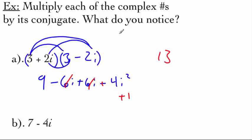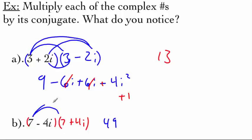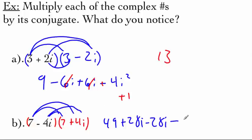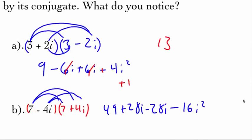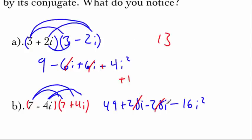When we multiply a complex number by its conjugate, we get a real number answer. Let's try 7 minus 4i — its conjugate is 7 plus 4i. FOILing: 7 times 7 is 49, 7 times 4i is 28i, negative 4i times 7 is negative 28i, and negative 4i times positive 4i is negative 16i squared. The 28i terms cancel, and since i squared is negative 1, we get 49 plus 16 equals 65 — again a real number.